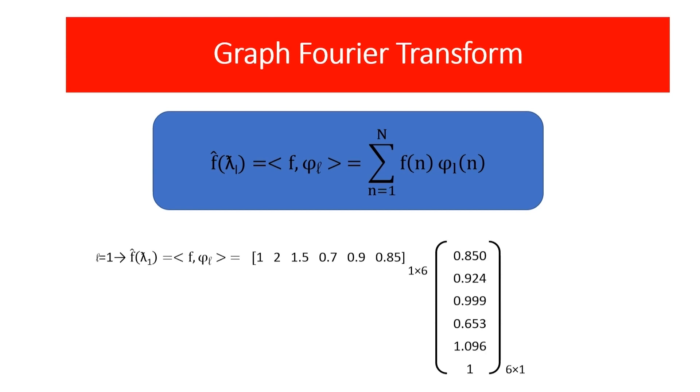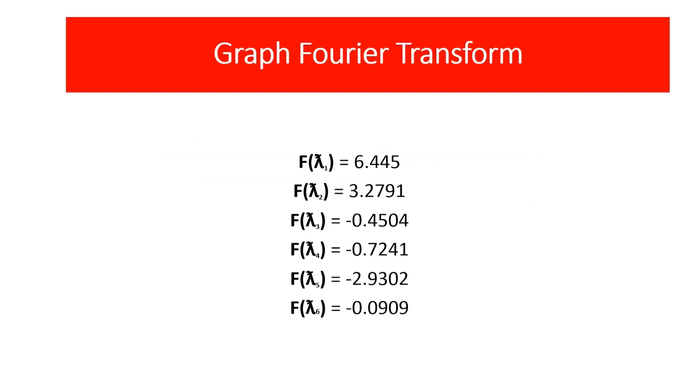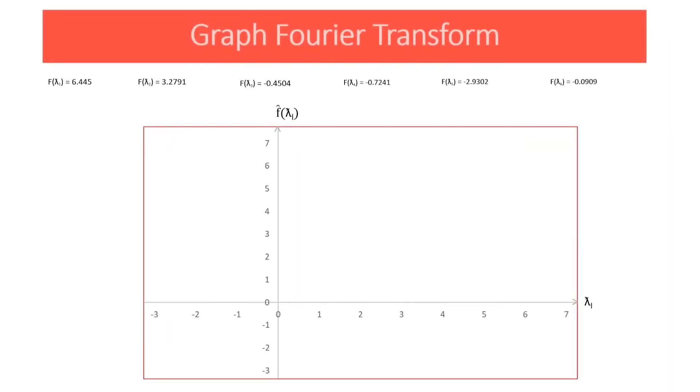From this we can calculate the graph Fourier transform corresponding to the graph frequencies. For an example if we calculate for L equals 1, the solution will be like. Similarly we can find for the rest of the L values too. We can represent the values in a graph for better understanding.